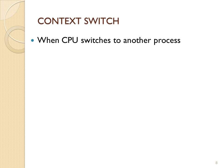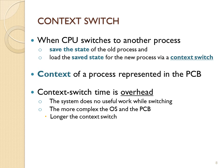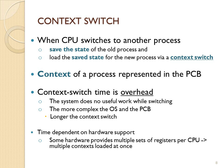A context switch is when you change the CPU from one process to another. Whether a process goes to I/O or gets interrupted and goes back to the ready queue, you want to be able to reload it where it stopped. A context switch saves the current context of the process — all the information in the PCB — and loads the context of the next process. This is pure overhead because the operating system must use resources to perform a context switch.